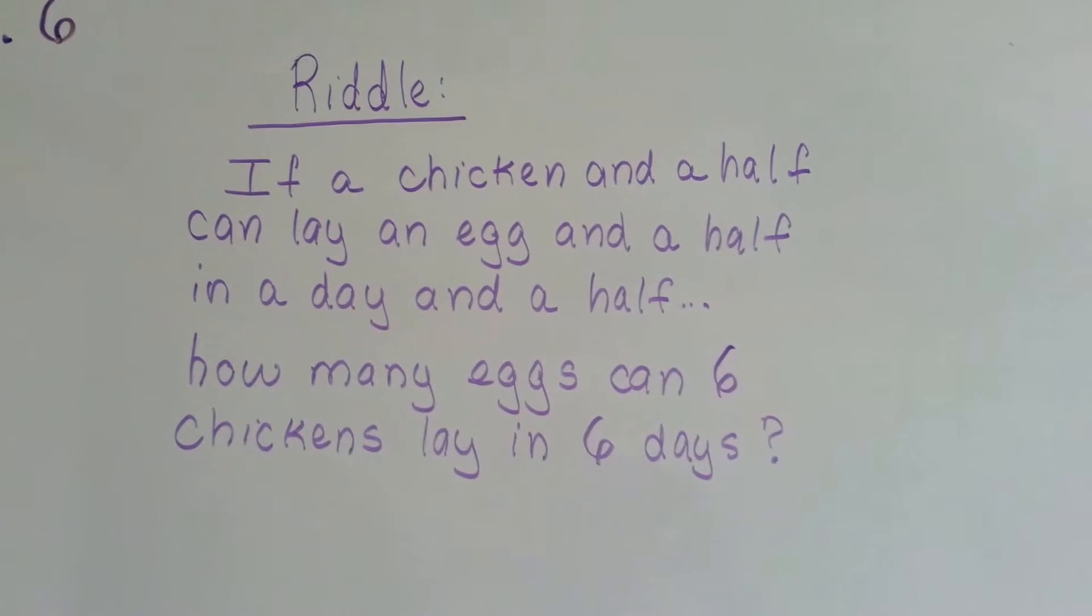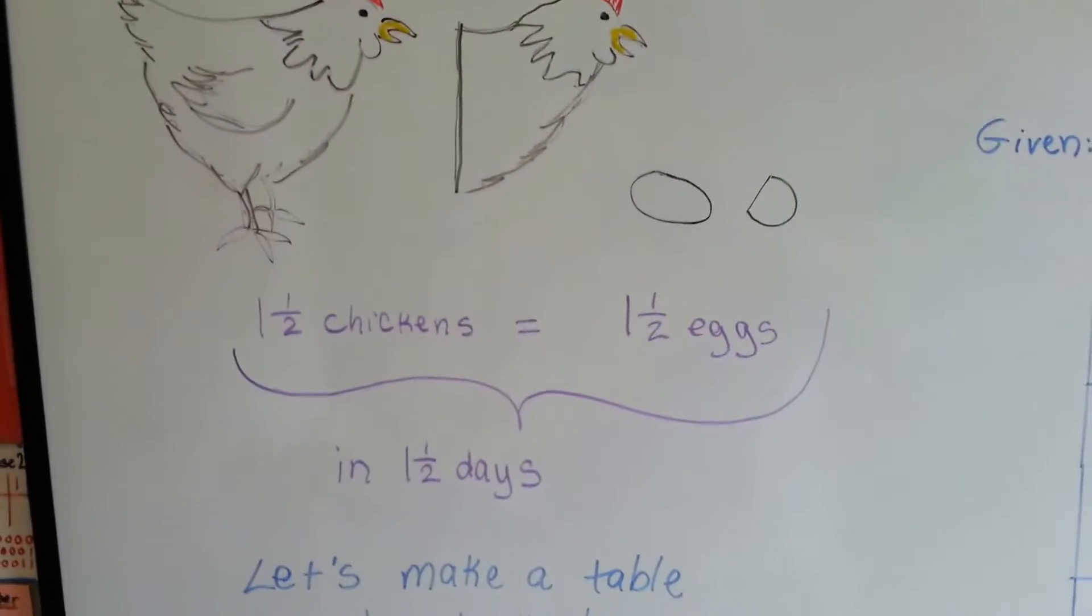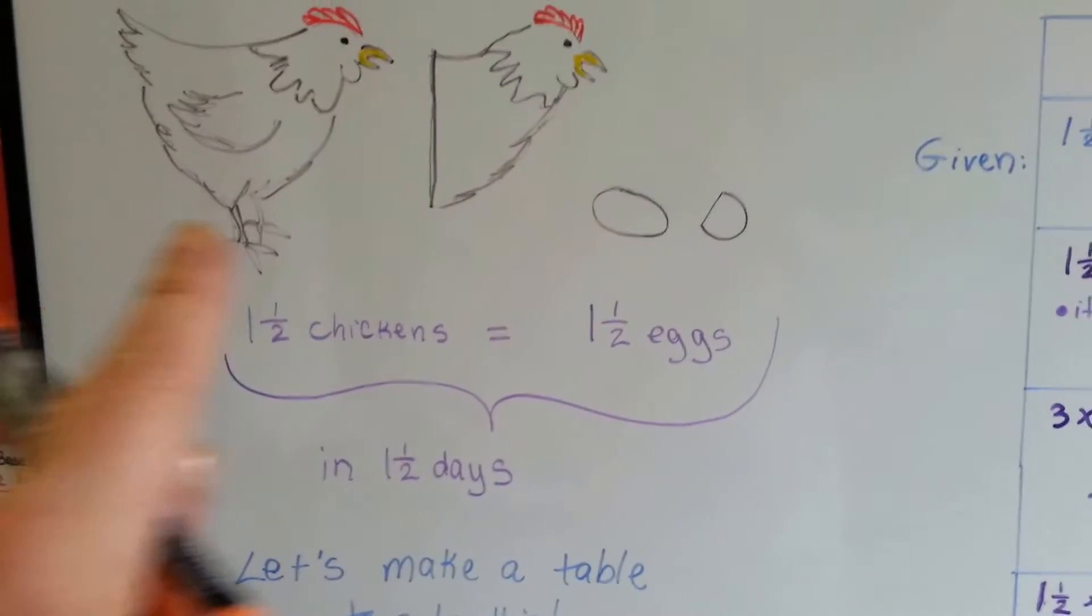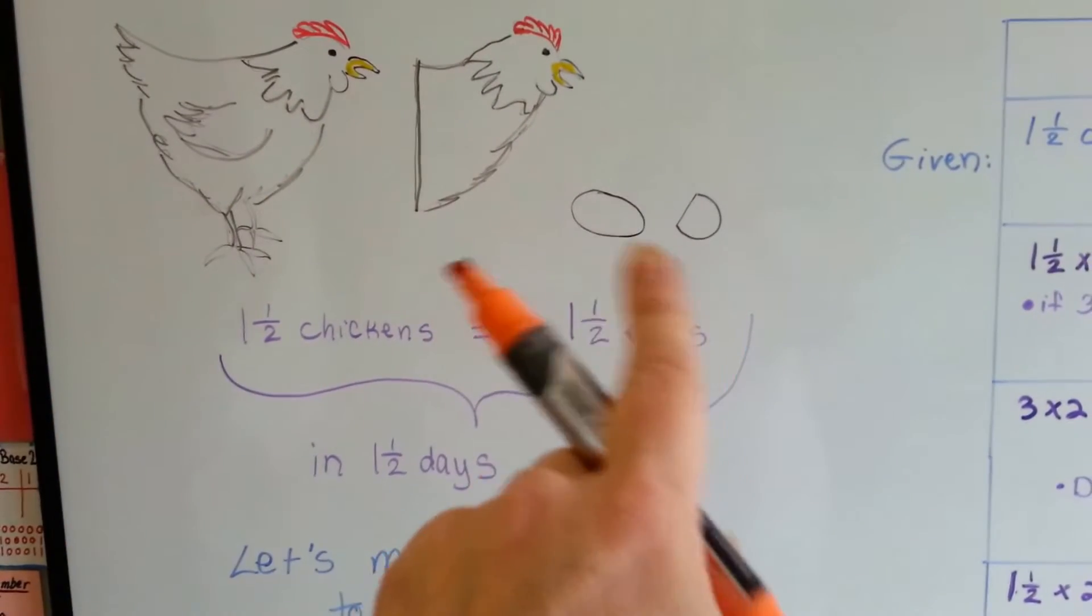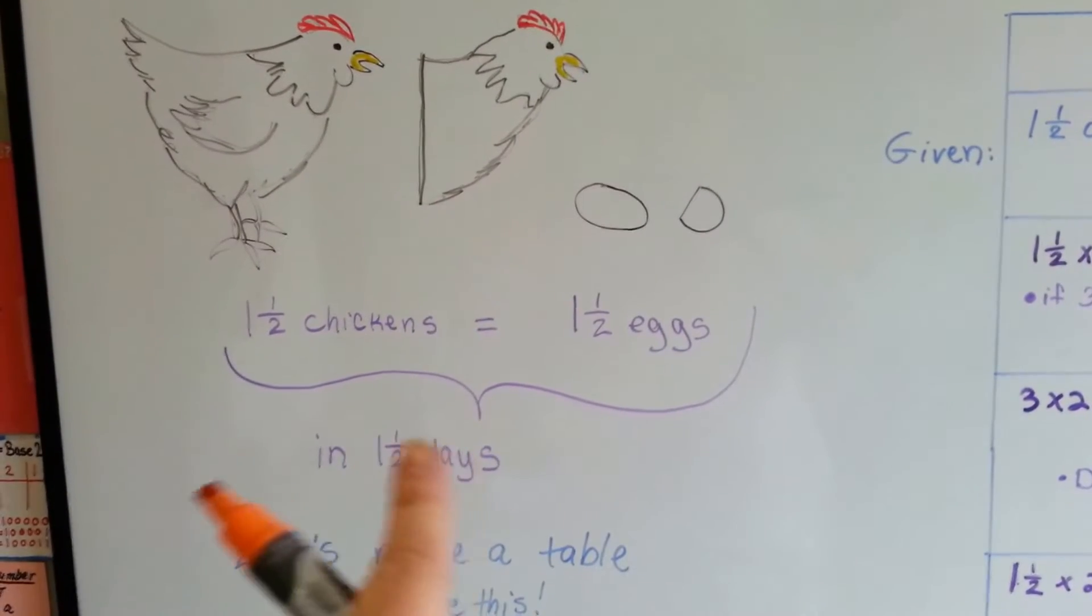Is that confusing? Alright, so here's our drawing to help us. We have a chicken and a half laying an egg and a half in one and a half days.